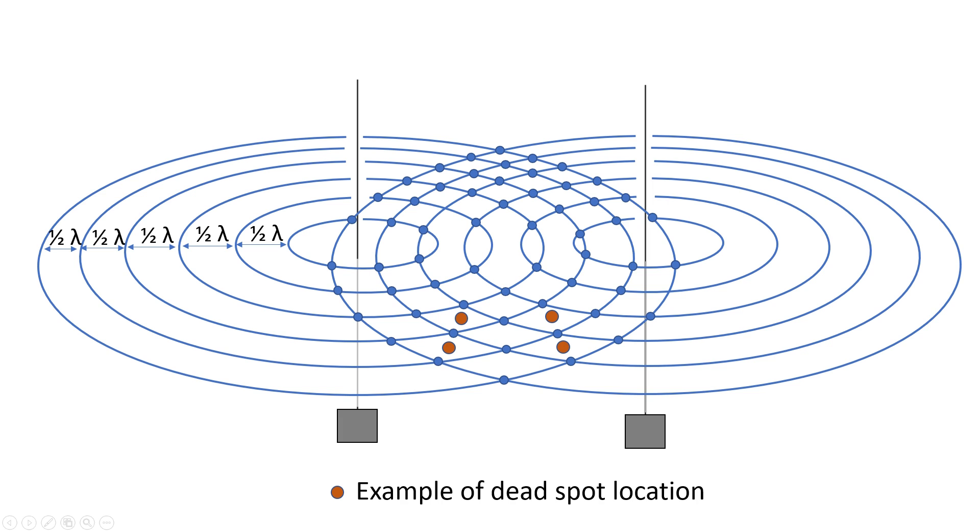This phenomenon is caused by interference of the radio waves. Basically, the dead spots are places where the radio waves from the two antennas cancel each other out exactly. Because there is a phase difference of half a wavelength between the two antenna signals.